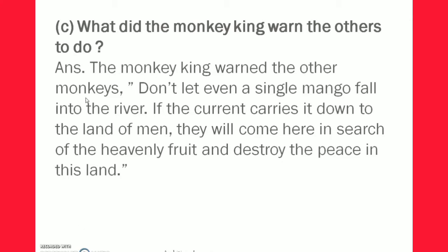Answer: The monkey king wanted the other monkeys to not let even a single mango fall into the river. If the current carries it down to the land of men, they will come here in search of heavenly fruits and destroy the peace in this land. मतलब बंदर राजा ने अपने बंदरों को चेतावनी दी कि एक भी आम को नदी में गिरने मत दो। यदि वर्तमान इसे पुरुषों की भूमि तक ले जाता है तो वे यहाँ स्वर्गीय फल की तलाश में आएंगे और इस भूमि में शांति को नष्ट करेंगे।